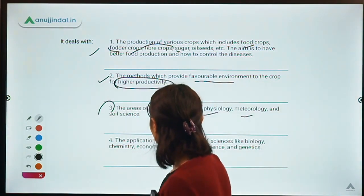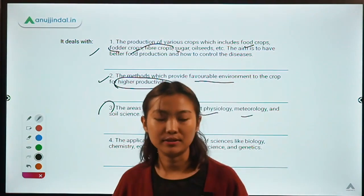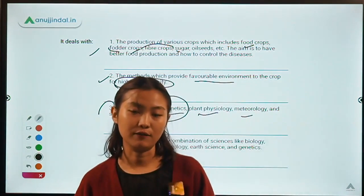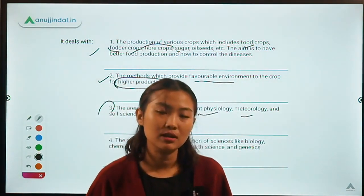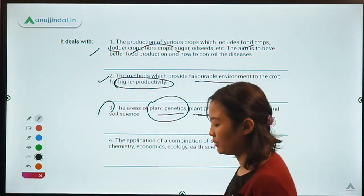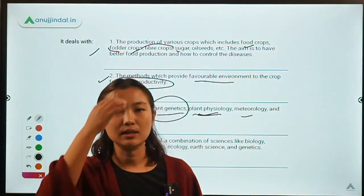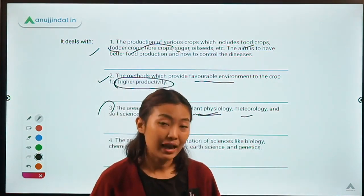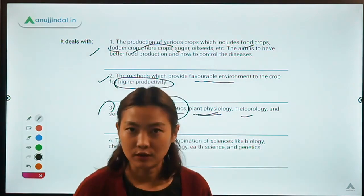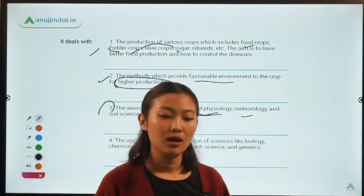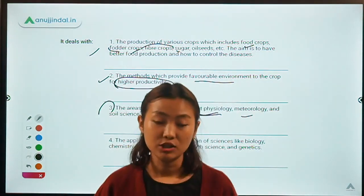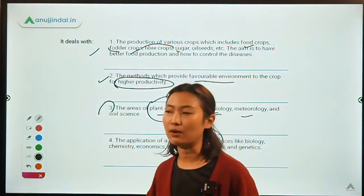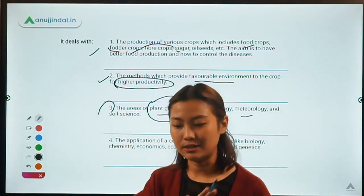Coming to plant genetics: genetics is the study of genes and heredity. Plant genetics basically means the study of genes, heredity, and gene variations in plants. And coming to plant physiology: plant physiology deals with the study of the functions or life processes of plants. Just as humans have different organs in our body with different functions, plants also have different parts with different functions, and plant physiology studies all these functions.